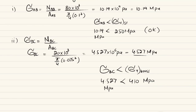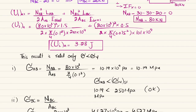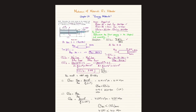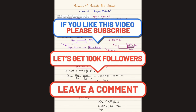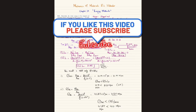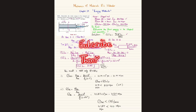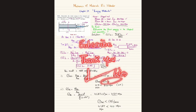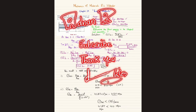Since both stresses are below their respective yield stresses, the strain energy stored in the body is confirmed as 3.28 joules. That concludes Problem 14-3. I hope you enjoyed and learned from this video. If you're new to my channel, please subscribe and press the bell icon for notifications. Share the videos with friends, and feel free to ask questions in the comments. Thank you for watching and supporting me.